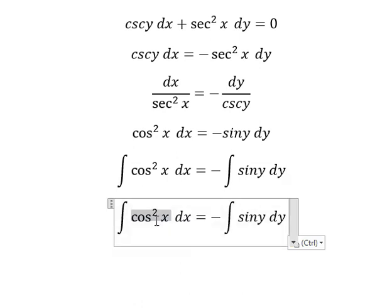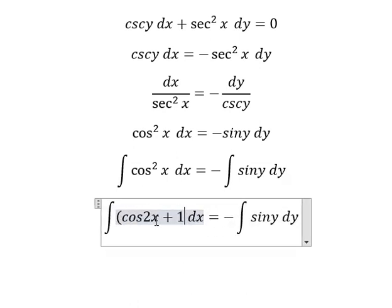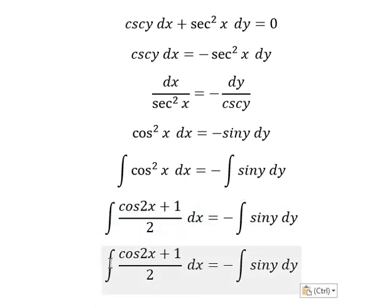About secant of x square, we can put into cosine 2x plus 1 over 2, so I will put number 2 outside.